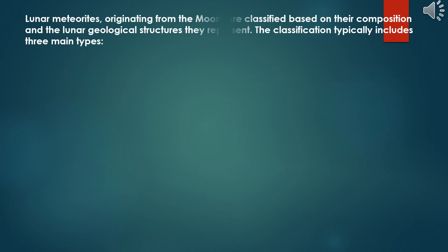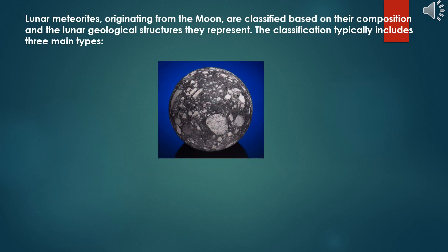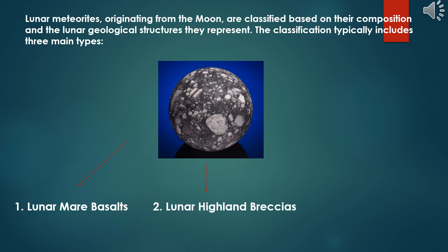Lunar meteorites originating from the Moon are classified based on their composition and the lunar geological structures they represent. The classification typically includes three main types.